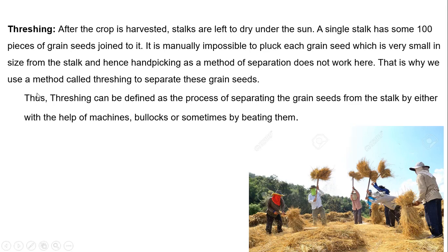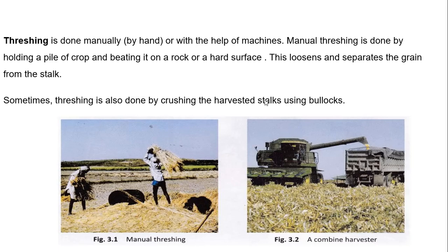So what is threshing? Threshing can be defined as the process of separating the grain seeds from the stalk, either with the help of machines or sometimes by beating them. The threshing is done manually with the help of the hand or with a machine. When done manually, they generally hold a pile of crops and beat it on a rock or any hard surface. When they do this, the grains get loosened and separated from the stalk. Sometimes threshing is also done by crushing the harvested stalk using bullocks.